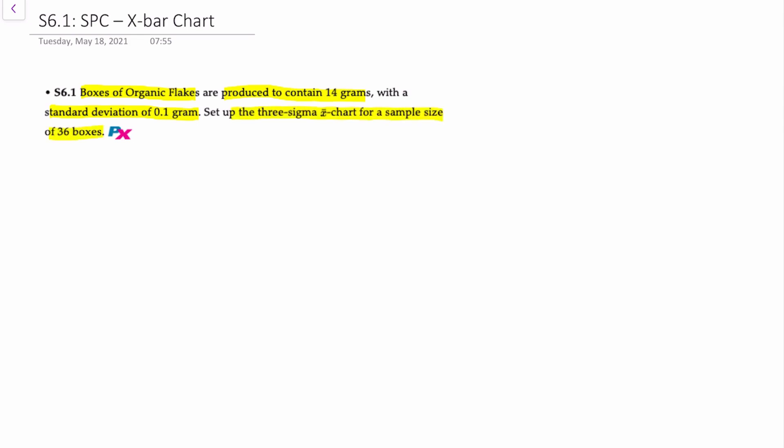The first thing we'll note is we are provided with the standard deviation in this question. However, we have to make sure that we correctly interpret which standard deviation we have. This standard deviation is just sigma, which is the population or process standard deviation, not the standard deviation of the sample means.